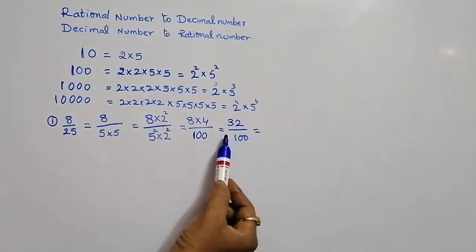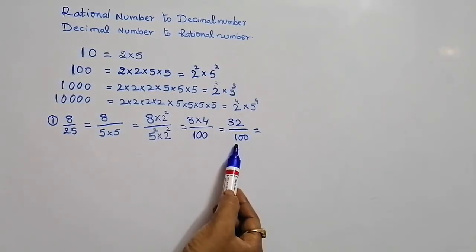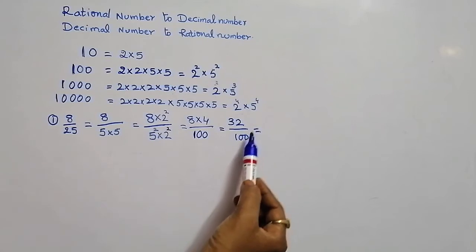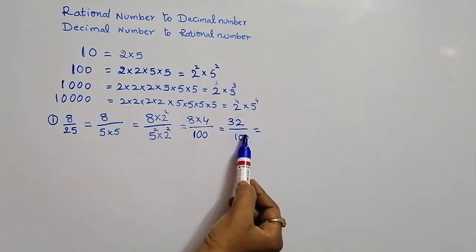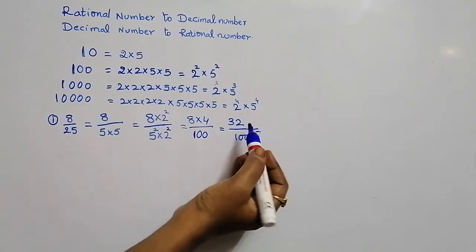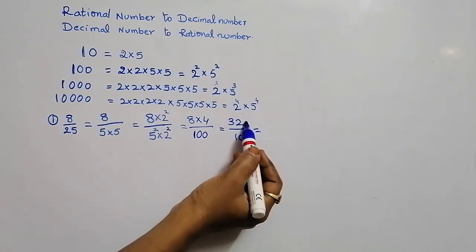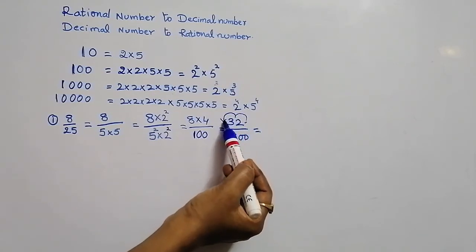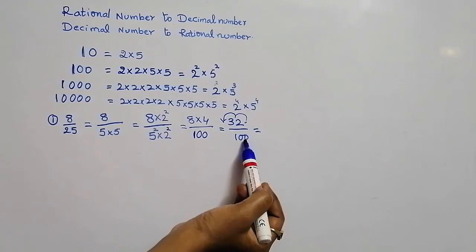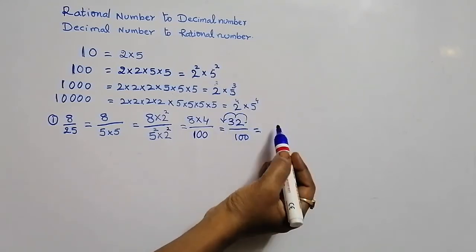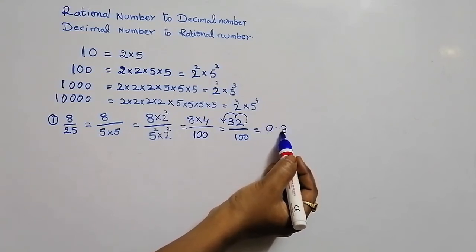Now convert 32 by 100 into its decimal form. The denominator has 2 zeros, so the decimal point moves 2 places to the left. The number becomes 0.32.